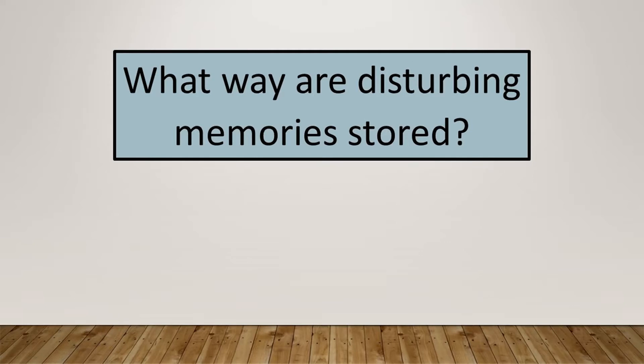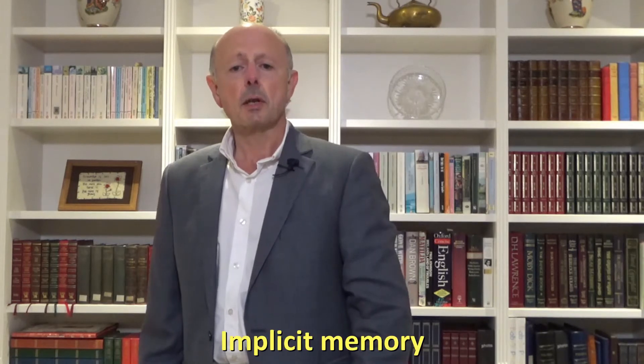What way are disturbing memories stored? When disturbing memories occur, they become locked in the brain, stored the way they were experienced at the time of the original event, locked in what's called implicit memory.